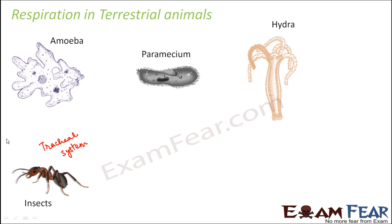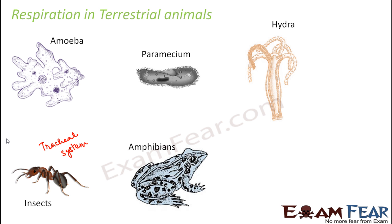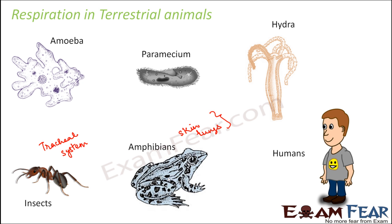The tracheal system is nothing but a network of air tubes. Amphibians also use skin for diffusion — their skin acts as a respiratory surface and they also have lungs, so they have both a specialized organ like lungs and their skin acting as the respiratory surface. More advanced animals like human beings have specialized structures called lungs. When we talk about the human respiratory system, we will see how the air is taken in and which pathway it follows to reach the lungs. So these are some of the ways by which different terrestrial and aquatic animals undergo respiration.